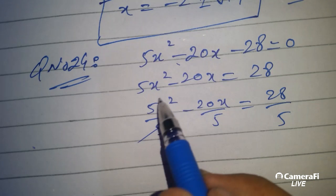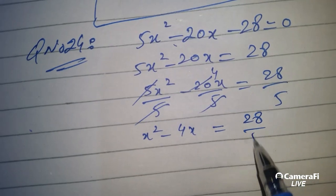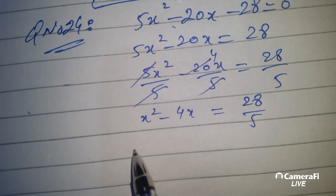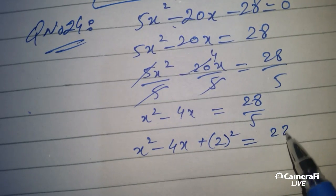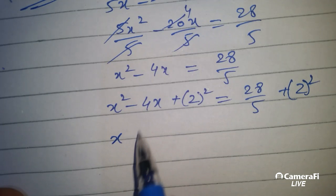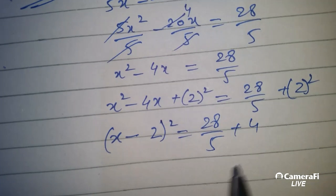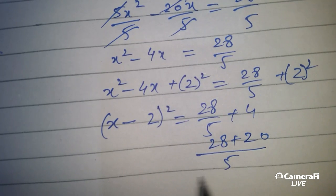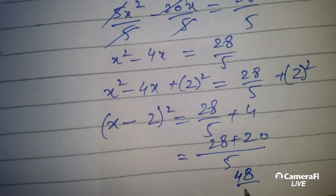Here we have 28 by 5. So this half you have to add — if you have to add 2 squared, you have to add on both sides. So here is minus 2, and whole square. 28 by 5. And this half is 4. So the LCM gives us 48 by 5.